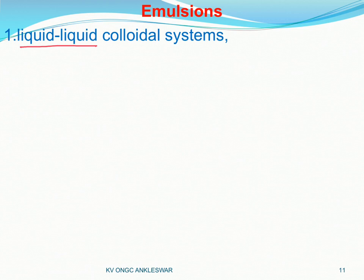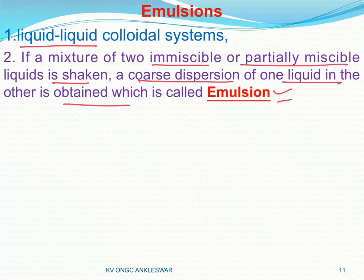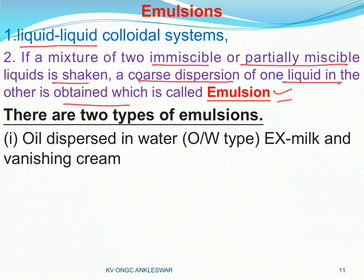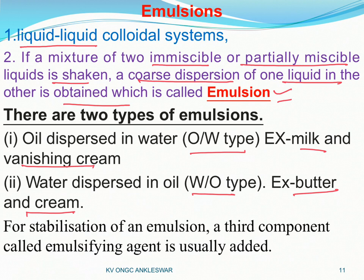The last term of this chapter is emulsion. An emulsion is a colloidal system where two immiscible or partially miscible liquids form a coarse dispersion of one liquid in the other. There are two types: O/W type (oil dispersed in water, where the dispersed phase is oil and the dispersion medium is water) and W/O type (water dispersed in oil). Examples: milk and vanishing cream are O/W type, while butter and cream are W/O type.